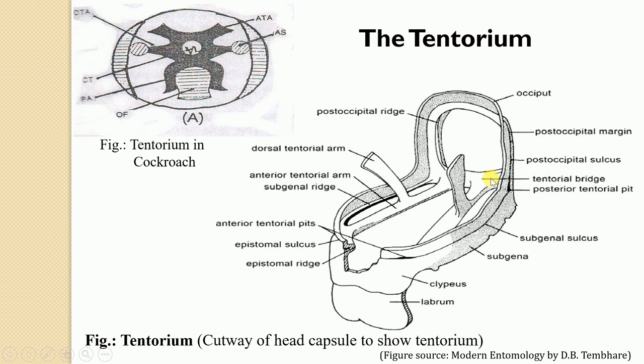Similarly, the posterior tentorial arms arise from the posterior tentorial pit. In the diagram, the posterior tentorial pit shows an inward growth which gives rise to the posterior tentorial arm. This posterior tentorial pit lies at the lower end of the post-occipital suture. As we learned in the previous lecture, the posterior tentorial pits are always present on the post-occipital suture, and this is the point of origin for the posterior tentorial arm.